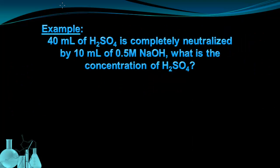So in this example, 40 milliliters of sulfuric acid is completely neutralized by 10 milliliters of 0.5 molar sodium hydroxide. What's the concentration of sulfuric acid? So we have a neutralization reaction occurring. There's given volume, some unknown concentrations. This is pretty clearly a titration problem. So we're going to use Ma times Va equals Mb times Vb. And just like we always do when we have an equation, we set up our variables first.